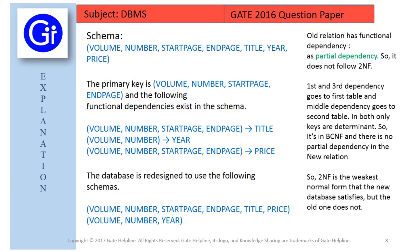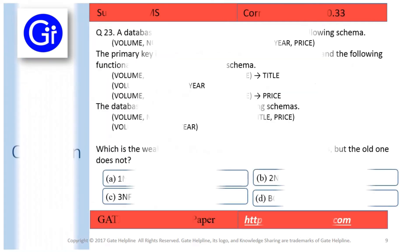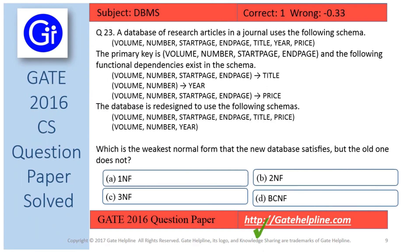So, 2NF is the weakest normal form that the new database satisfies but the old one does not. The old schema fails 2NF due to partial dependency, while the new schemas satisfy BCNF. Therefore, the answer to this question is option B — 2NF.